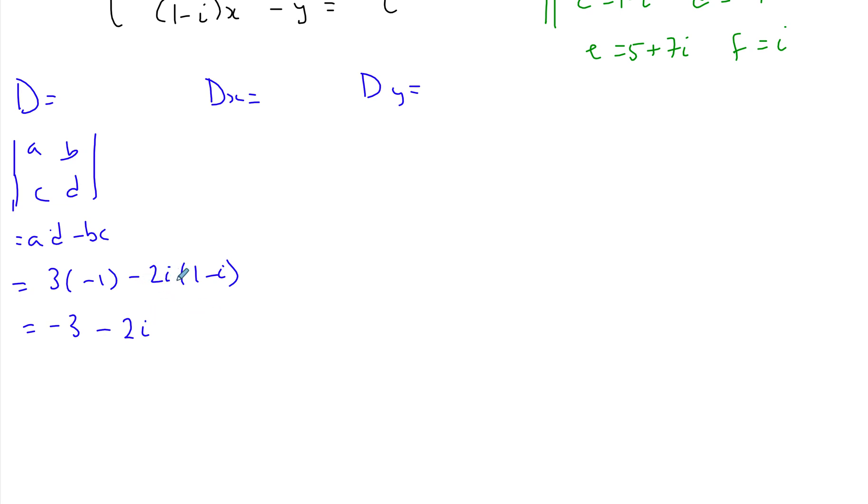And -2i times -i is positive 2i squared, but i squared is just -1, so it's -2. This simplifies to -5 - 2i. So this is for the discriminant.